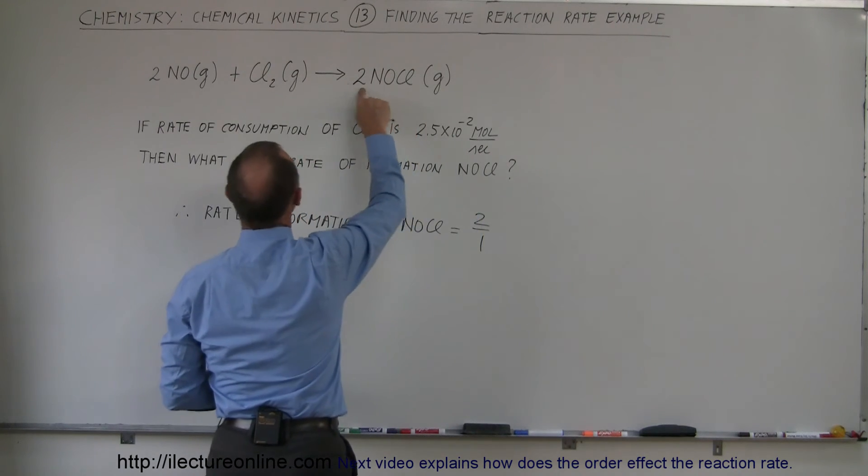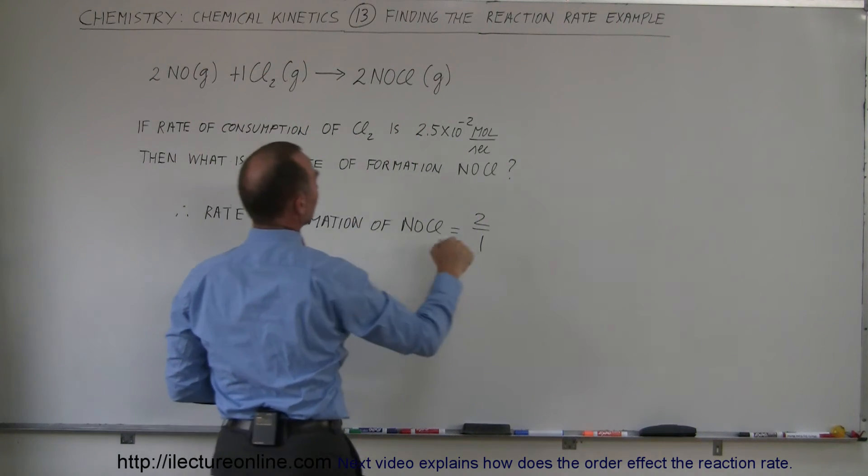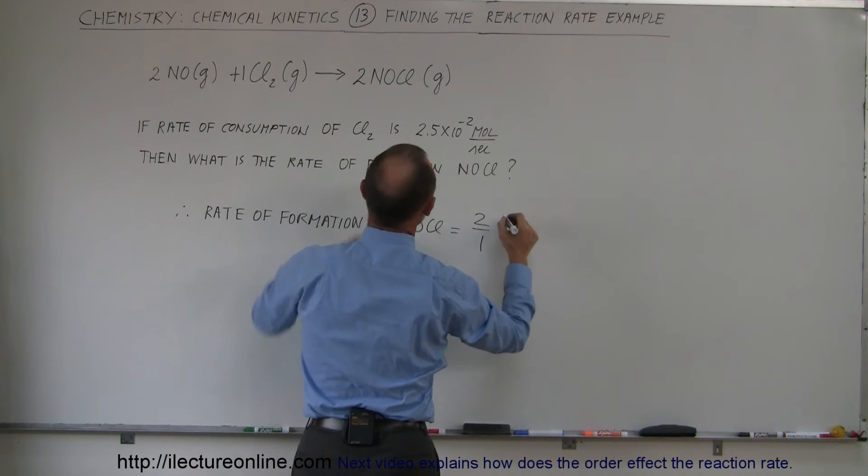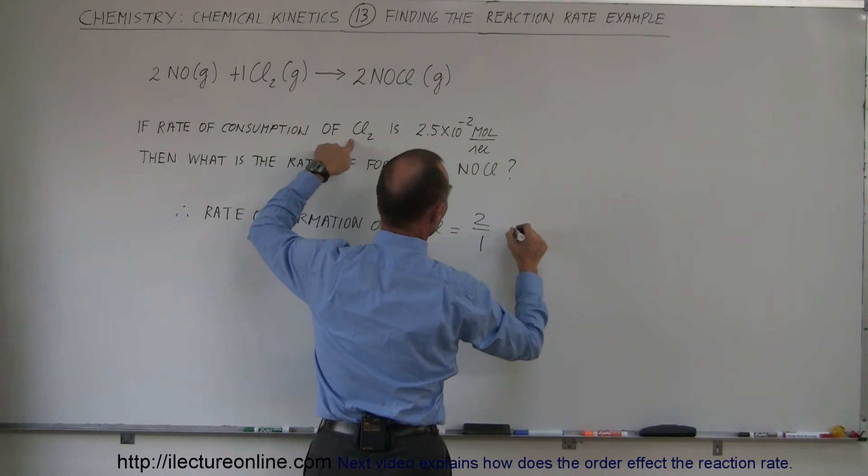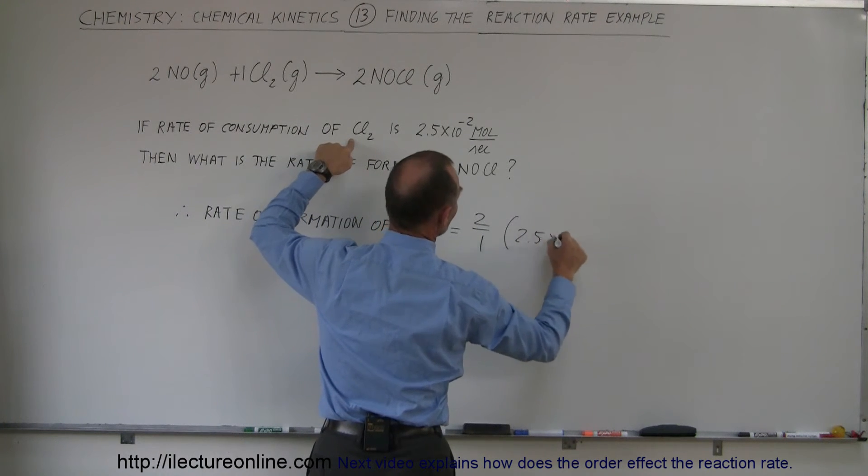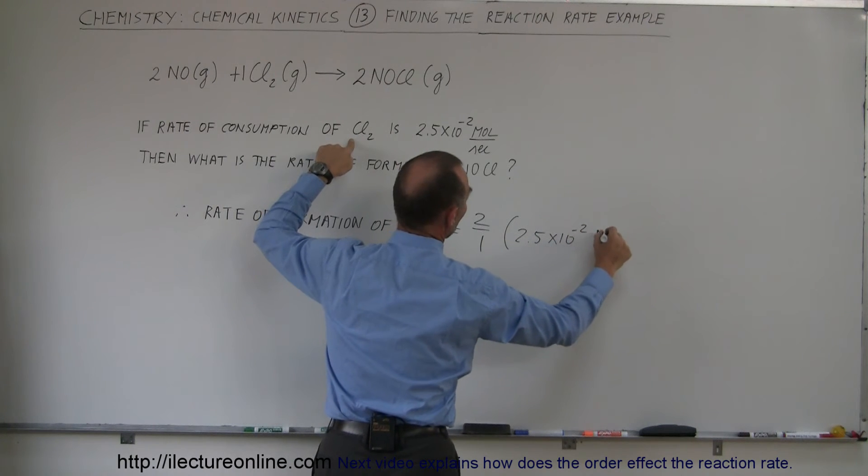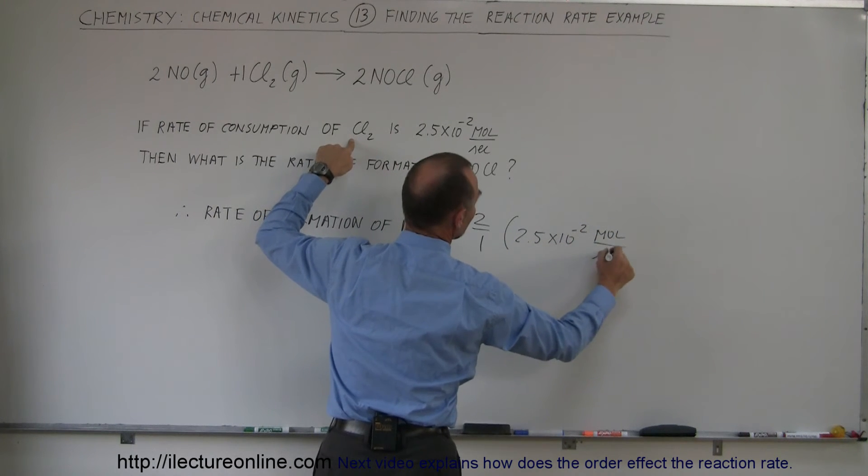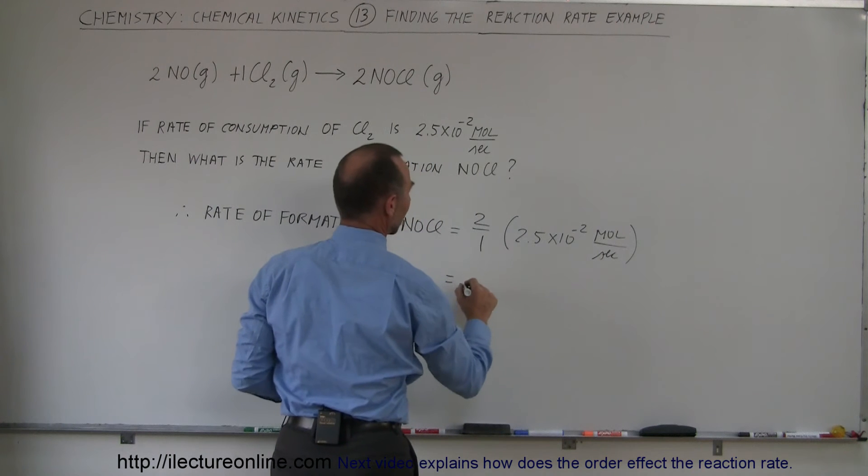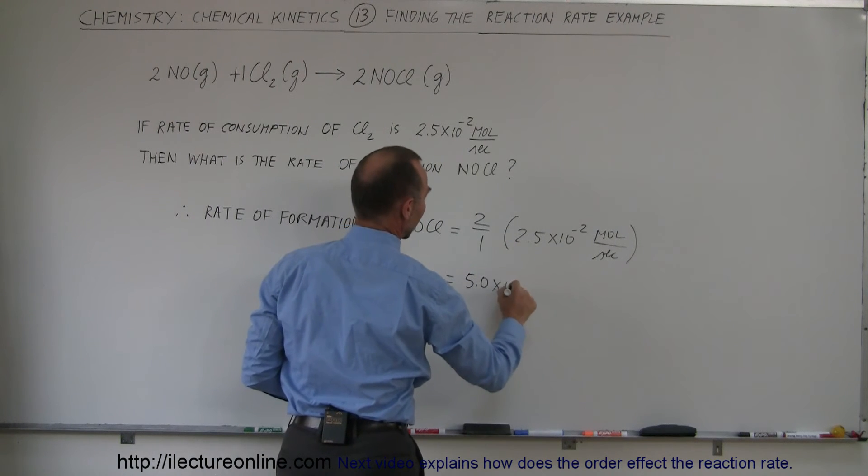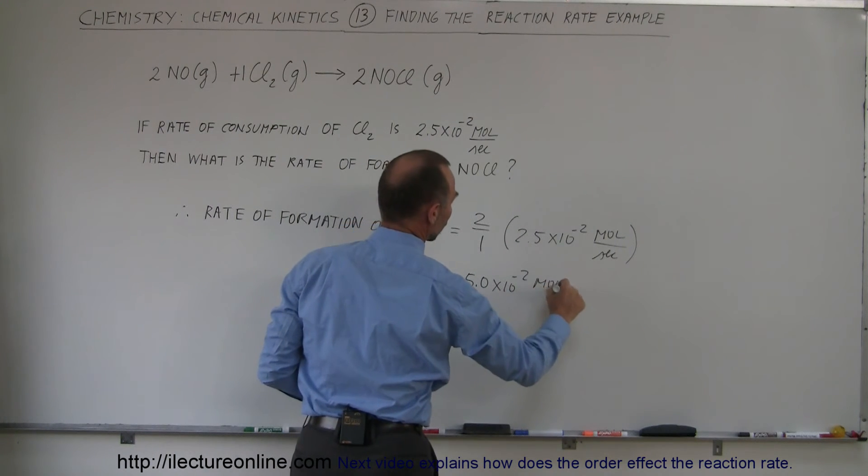And so therefore we can say that the rate of formation of NOCl is equal to 2 to 1, because it's 2 to 1, this is the one up front here. 2 to 1 times the rate for the consumption of chlorine gas, which would be 2.5 times 10 to the minus 2 moles per second. So therefore we can say this is equal to 5.0 times 10 to the minus 2 moles per second.